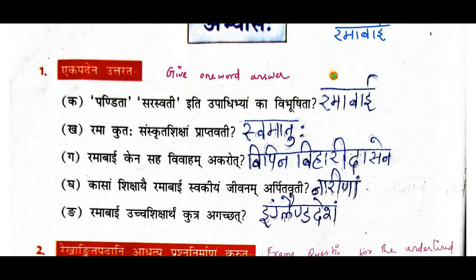Third question: kenasaha vivaham akaroth — with whom was Ramabhai married? She was married with Vipinabihari Das, so the answer is vipinabihari dasena. Fourth question: kasam sikshaye ramabhai svakiyam jivanam arpitavati — for whose education did Ramabhai sacrifice her whole life? She sacrificed her life for ladies' education, so narinam is the answer.